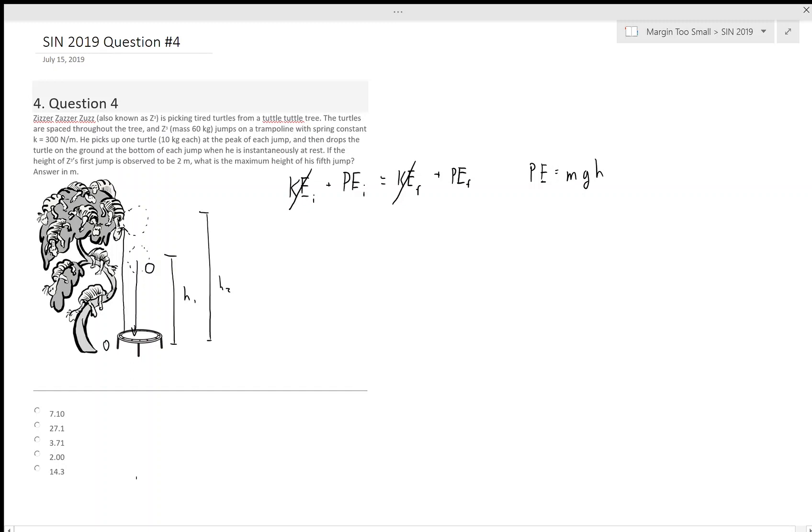The mass of the first scenario contains both the mass of Z-Cubed, which is 60 kilograms, and a turtle, which is 10. G is G, and its height we set with h1. And its final potential energy at its second-highest point, Z-Cubed's mass is 60, but he doesn't have the turtle anymore, so it's just 60. And then we have G, and then h2.